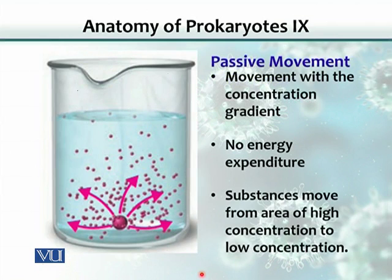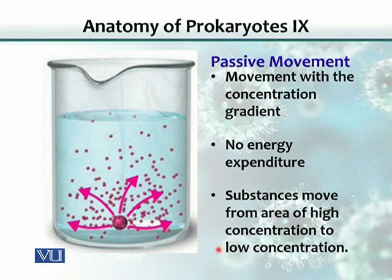Passive movement is movement with the concentration gradient. That means the substance moves from the most concentrated area to less concentrated areas. As the name indicates, no energy is required, and substances move from an area of high concentration to low concentration of the solute.